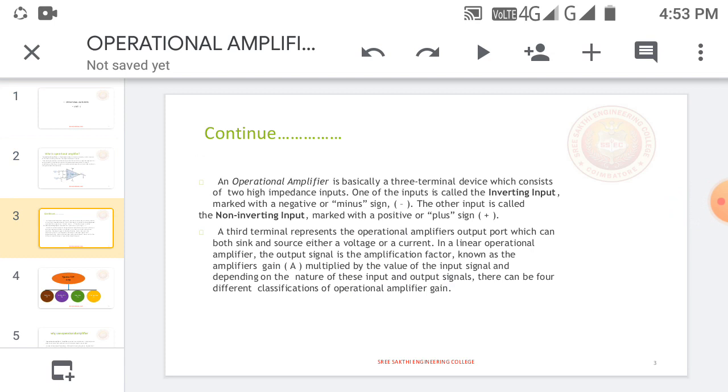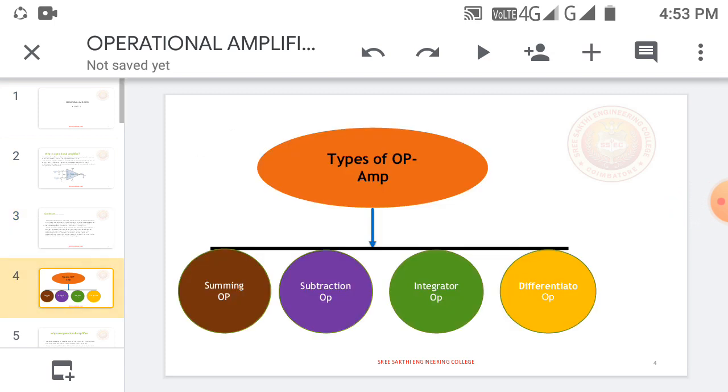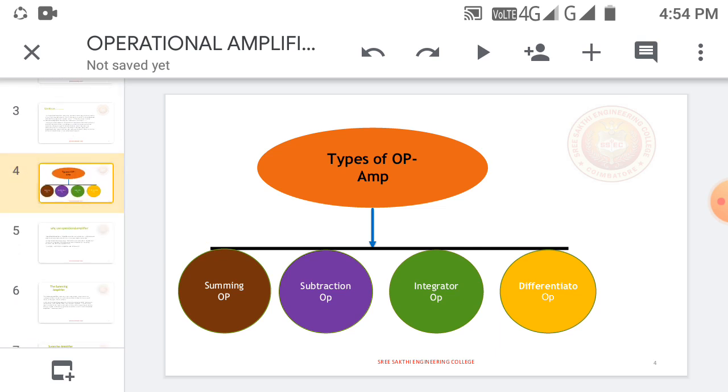If an Op-Amp is used as an amplifier, we can give the input to either the inverting input or the non-inverting input. For example, if we use the inverting input for amplification, the output will be 180 degrees out of phase with the input signal. There are different types of Op-Amp circuits: summing amplifier, subtraction, integrator, and differential amplifiers.